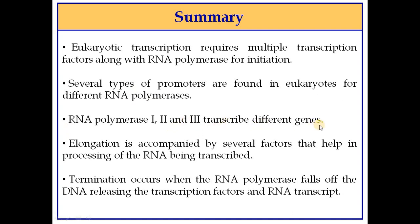To summarize eukaryotic transcription: RNA polymerases 1, 2, and 3 transcribe different genes, and specific transcription factors and identifiable promoters are involved for each. Elongation is accompanied by several factors that help in RNA processing. Termination occurs when RNA polymerase leaves the DNA, releasing transcription factors and the RNA transcript, the transcription bubble collapses, the DNA duplex reforms, and the DNA regains its chromatin structure.